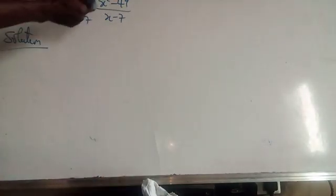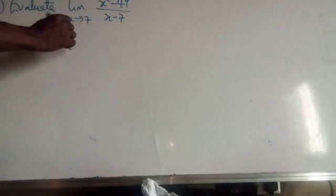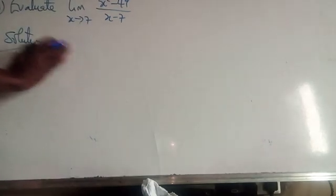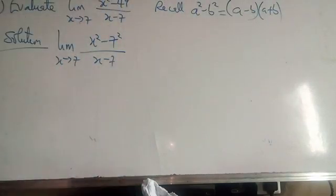If we look at the numerator closely, the numerator has degree 2 while the denominator has degree 1, so it's very possible we can find a factor of the denominator in the numerator. The numerator x squared minus 49 is a difference of two squares — we can write it as x squared minus 7 squared. Recall that a squared minus b squared equals (a minus b)(a plus b). So the expression becomes the limit as x tends to 7 of (x minus 7)(x plus 7) all over (x minus 7).